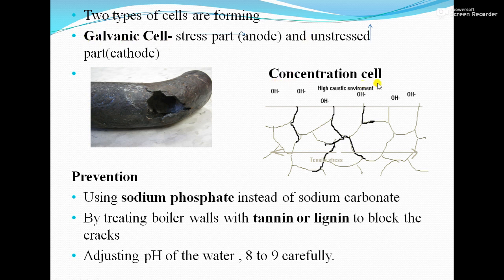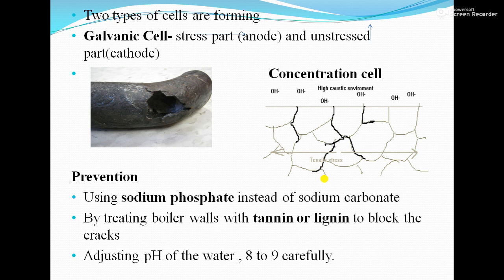The second cell is a concentration cell. NaOH present in the water penetrates through cracks by capillary action. This creates two regions: a higher concentration of NaOH at the surface and a lower concentration at the bottom. The region with higher NaOH concentration acts as the cathode and the lower concentration region acts as the anode, resulting in corrosion. This corrosion under highly caustic conditions is why it is called caustic embrittlement.